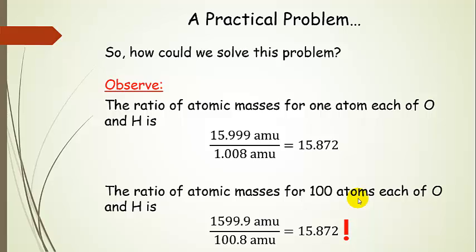Take a look at the ratio of atomic masses for one atom of oxygen and one atom of hydrogen — these are the average atomic masses. So 15.999 AMU for oxygen, 1.008 AMU for hydrogen. If you take that ratio, you get 15.872. And if we take 100 of each and divide it the same way, we find out it's the same ratio, 15.872.